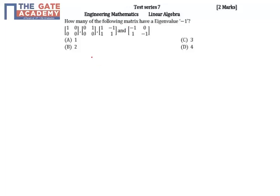The given problem asks how many of the following matrices have an eigenvalue of minus 1. For any matrix, to find the eigenvalues, the formula is lambda I minus A equals 0, where you are finding the eigenvalues of matrix A.